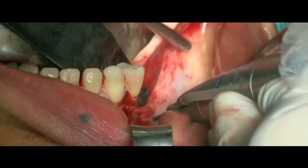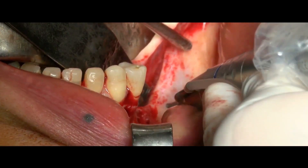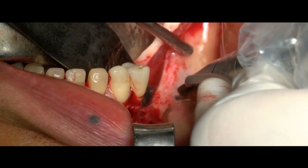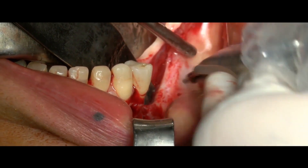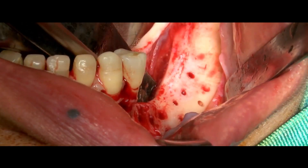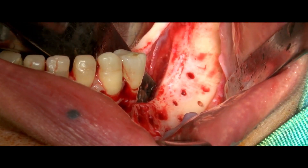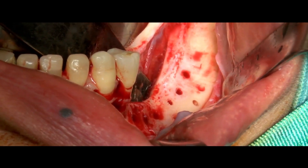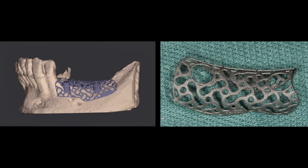Perforations of the cortical bone are done in order to accelerate revascularization of the grafted area, and then we are ready to place the customized mesh.